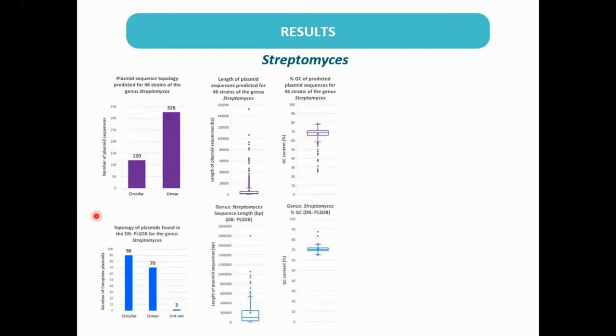In the PLSDB database, we found 162 complete Streptomyces plasmids. The average length of the predicted plasmid sequences was shorter than the complete plasmids, because the predictions were mostly plasmid fragments.